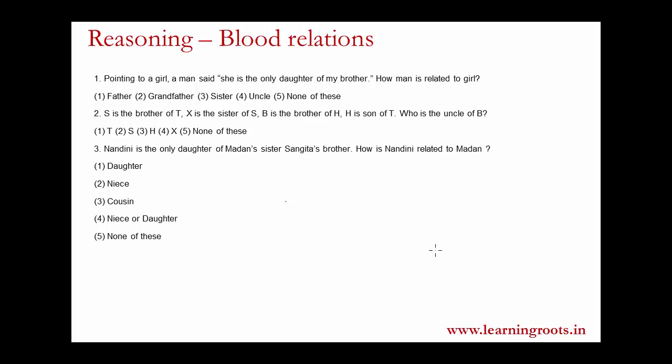Now we will go through blood relations, which are particularly important when it comes to reasoning questions. These can appear either as a standalone question — a single question followed by five options — or as part of a bigger setup. You can have a logical reasoning question with arrangements, either circular or linear, and then another thing which says that these people are related to each other.